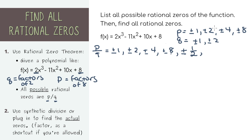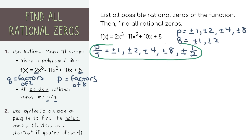You'll also notice that q can also equal plus or minus 2. So if you divide plus or minus 1 over plus or minus 2, you're going to get plus or minus 1 half. However, if you look at the rest of these numbers — 2, 4, and 8 — dividing them by 2 gives numbers we've already listed: 2÷2=1, 4÷2=2, 8÷2=4. So we've actually found all of the possible rational zeros for this function, and that answers the first part of the question.